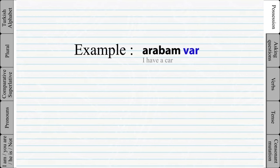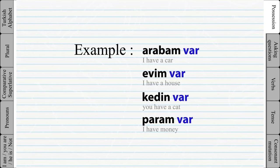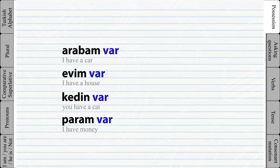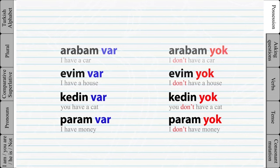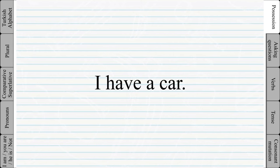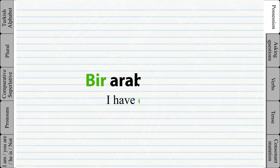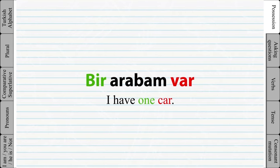For example, 'I have a car'. Instead of saying 'a car', in Turkish 'one car' is used since there is no equivalent word for the indefinite article 'a' in Turkish.